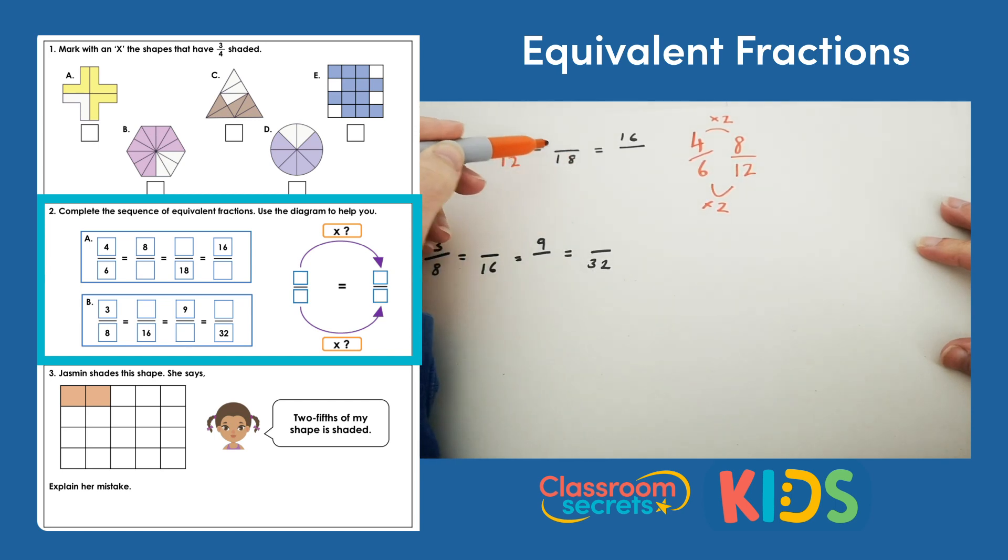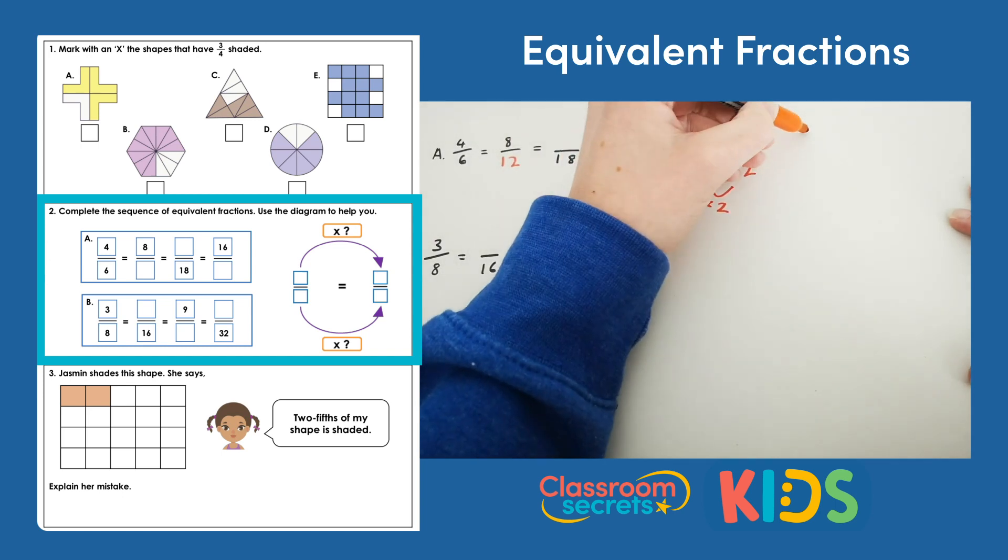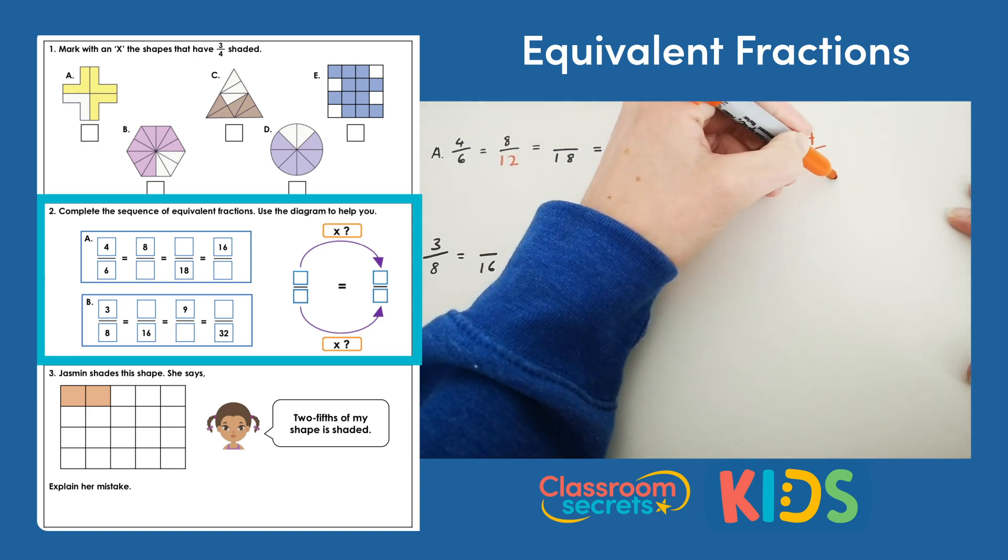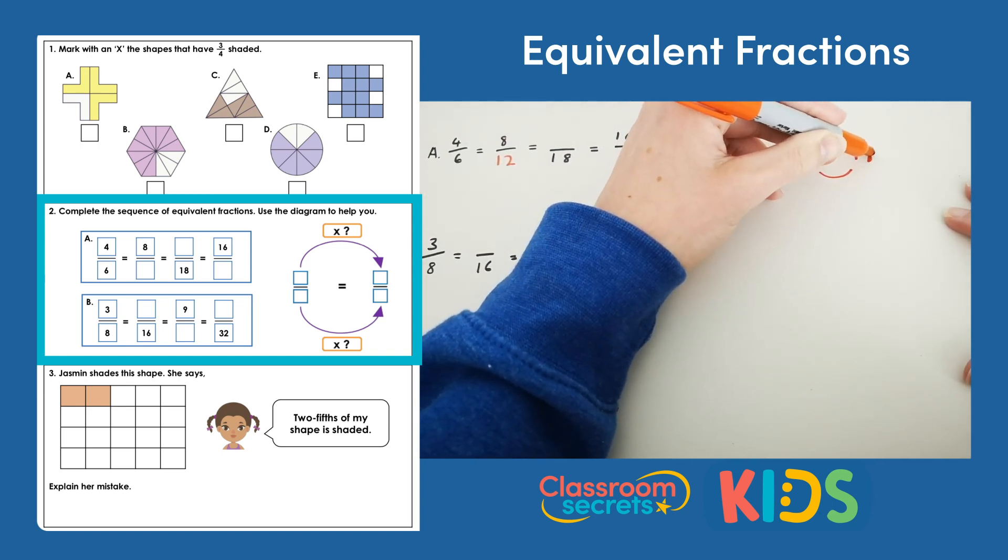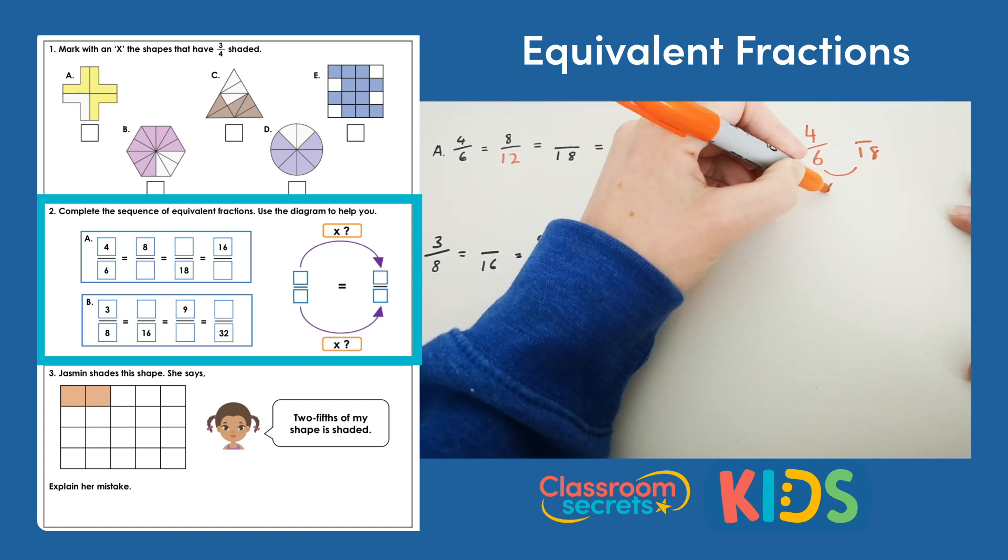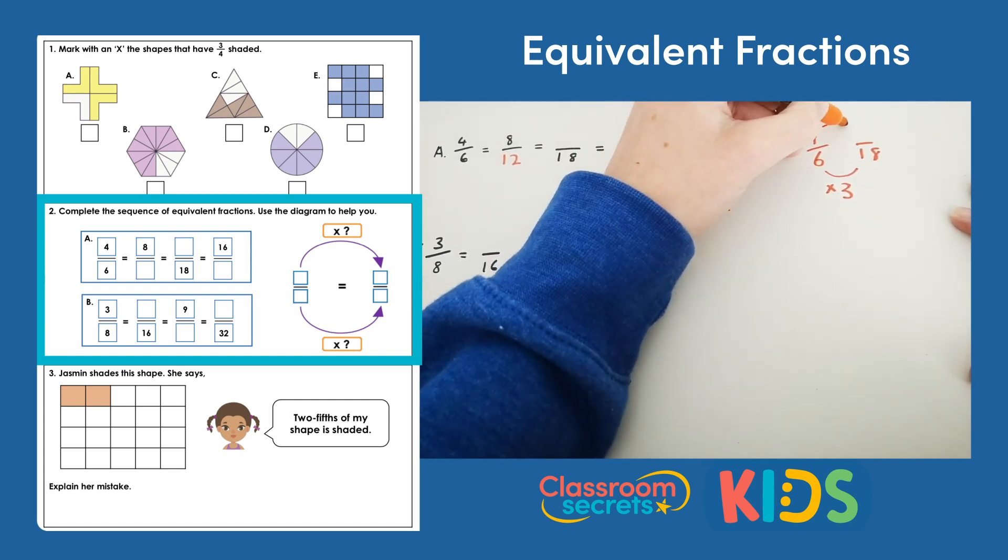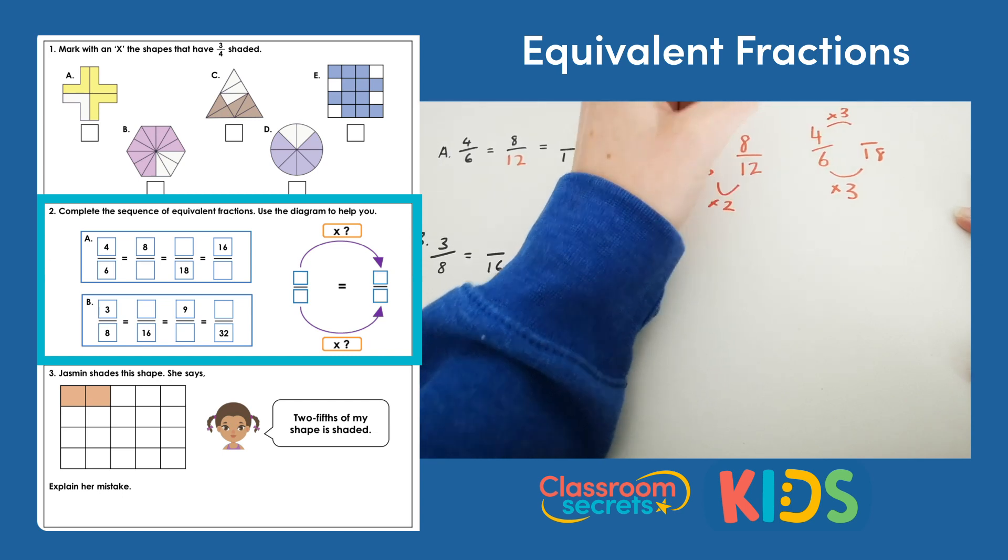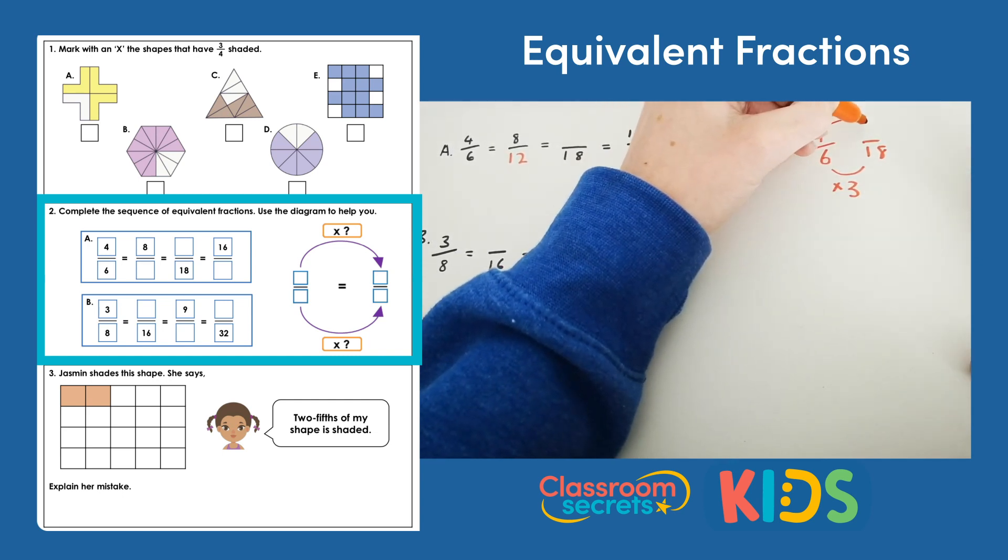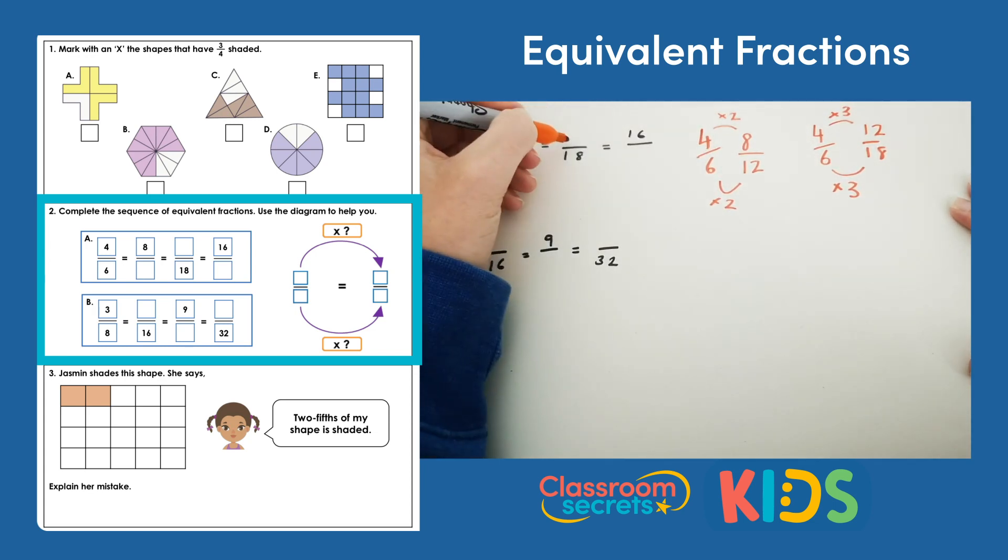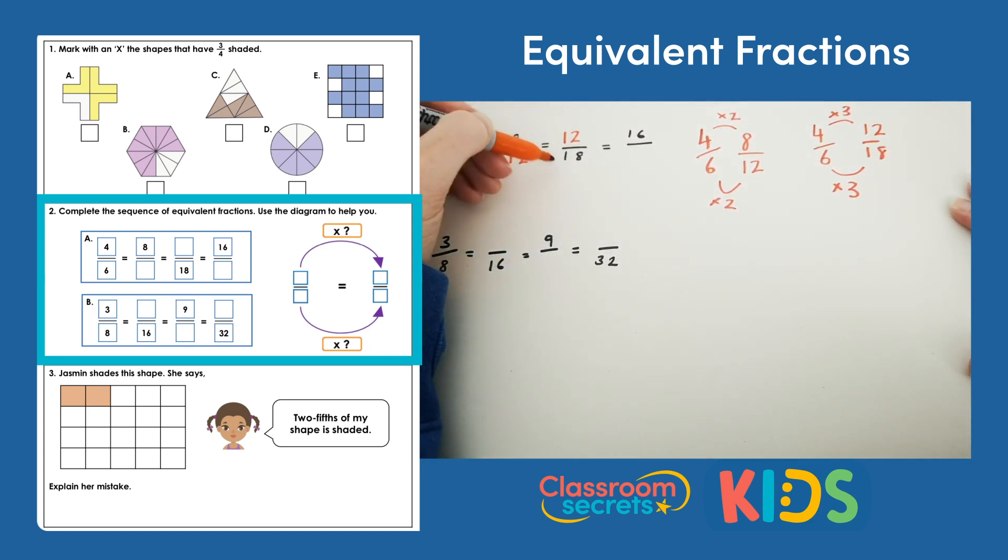The next fraction in the sequence has a denominator of 18. So if we think about 4 sixths again, to make 6 into 18 we must multiply by 3. Whatever we do to the bottom we do to the top, so we must times 4 by 3. 4 times 3 is 4, 8, 12. So 12 eighteenths is equivalent to 8 twelfths which is also equivalent to 4 sixths.